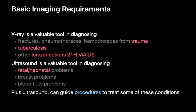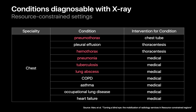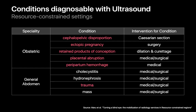Plus, ultrasound can be a very useful tool for guiding procedures to treat patients with some of these conditions — and that's only the tip of the iceberg. Besides conditions directly associated with trauma, TB, and lung infection, chest x-rays can help diagnose other conditions like pleural effusions, emphysema, asthma, occupational lung disease, and heart failure. Chest x-rays are also an important means of identifying immediate post-procedure complications such as pneumothoraces, pleural effusions, and hemothoraces. Bone x-rays can also help diagnose conditions like osteomyelitis and dietary deficiencies that affect the bones. Besides obstetrics and trauma, ultrasound can help diagnose cholecystitis, hydronephrosis, and abdominal masses in resource-constrained settings.